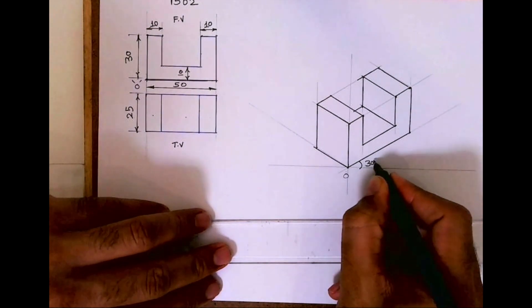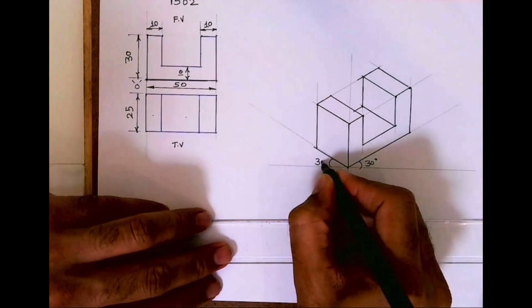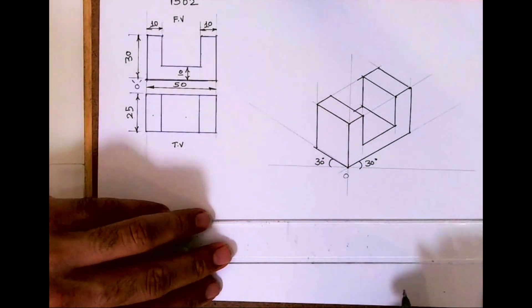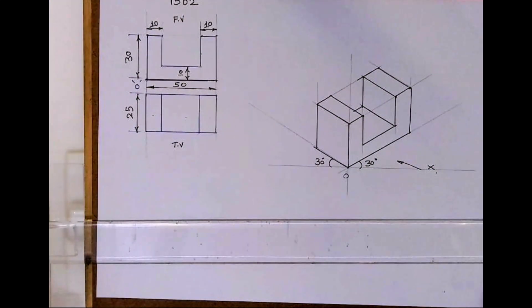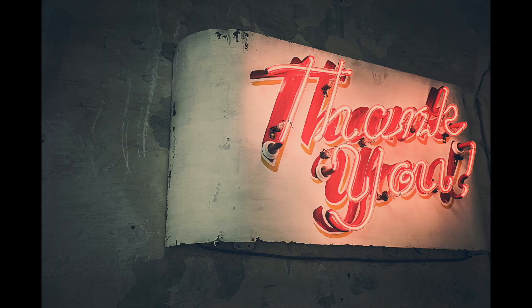Isometric, we can write 30-30 degree. And direction of viewing is from here. So I hope you people have understood this. Thank you.